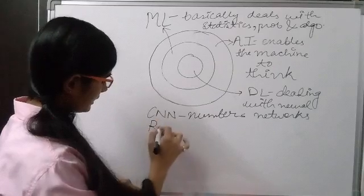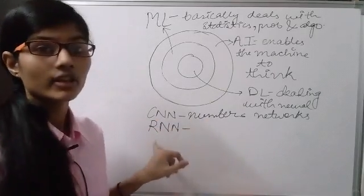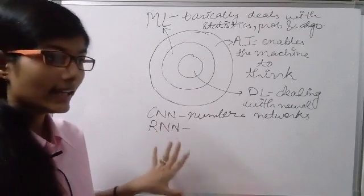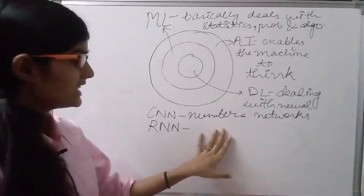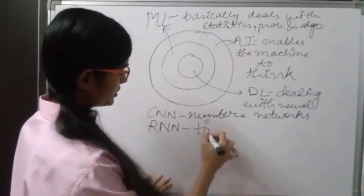we have RNN. So, RNN is recurring neural network. So, RNN basically deals with the timeline. That is time series.